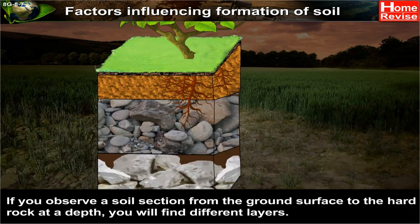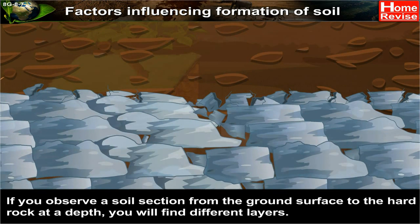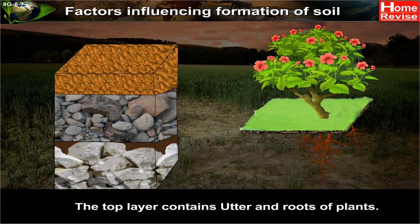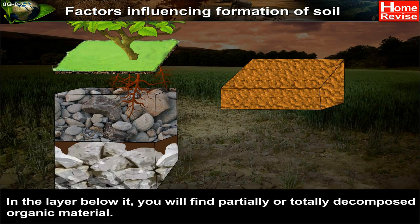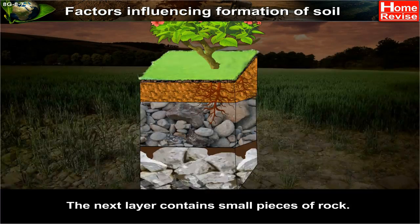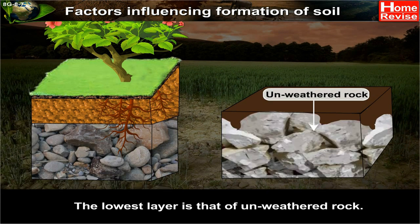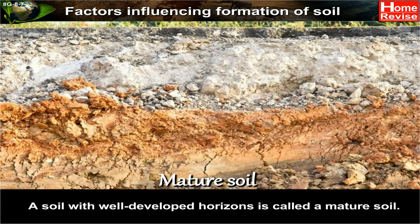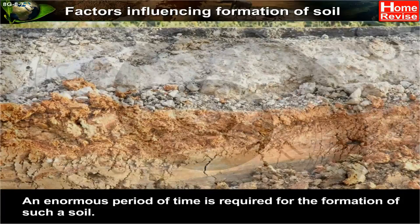If you observe a soil section from the ground surface to the hard rock at depth, you will find different layers called soil horizons. The top layer contains litter and roots of plants. In the layer below it, you will find partially or totally decomposed organic material. The next layer contains small pieces of rock, and the lowest layer is that of unweathered rock. A soil with well-developed horizons is called a mature soil, and an enormous period of time is required for the formation of such a soil.